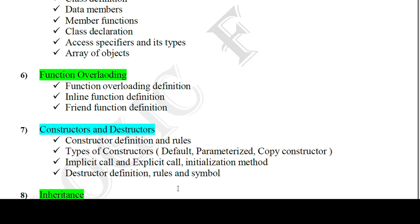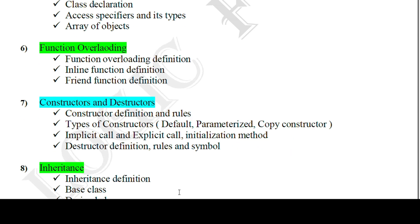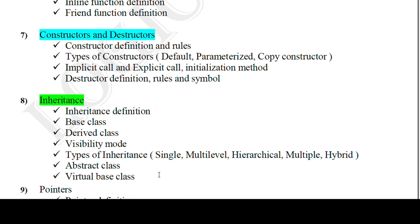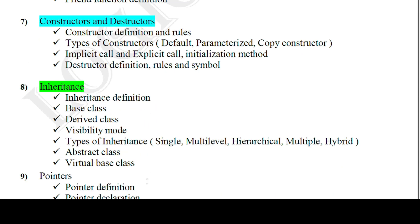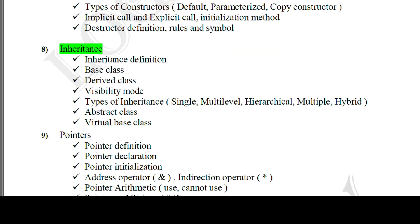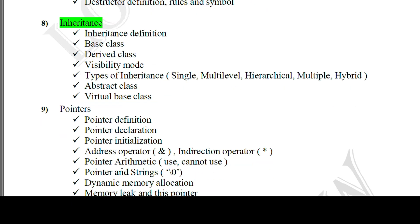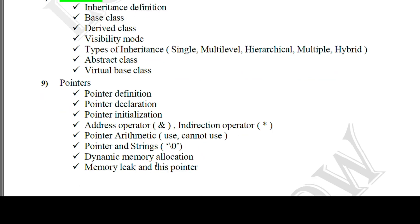Constructors and destructors are an optional chapter — you need to refer to those topics for MCQ preparation. Inheritance also has specific topics to cover. For pointers, this chapter you can largely skip, but for MCQ you can refer to the listed topics so that you can attempt those questions.